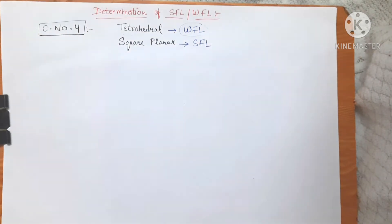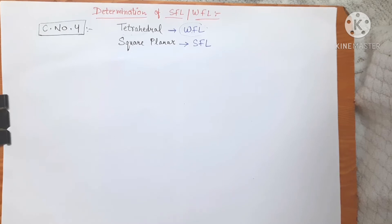The main concern here is that we have to find out whether the ligand is a strong field ligand or a weak field ligand. We are going to discuss three major rules using which we can determine, in case of coordination number four complexes, which ligands are going to behave as strong field ligands and which are going to behave as weak field ligands.